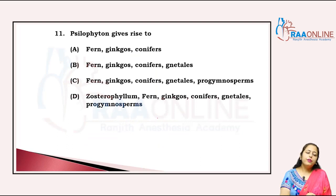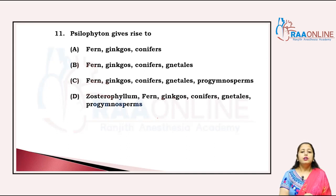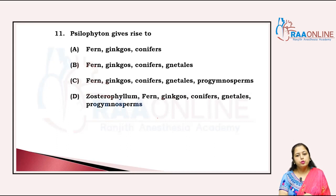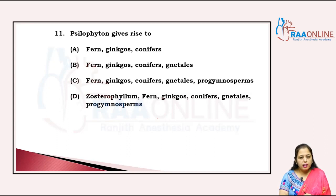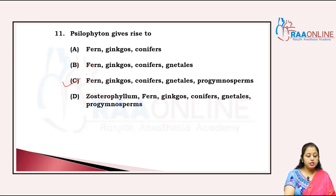Psilophyton gives rise to ferns, ginkgoes, and conifers — correct. Ferns, ginkgoes, conifer gentils — also correct. Ferns, ginkgoes, conifer gentils, and progymnosperms — also correct. But option D, zosterophyllum then ferns, ginkgoes, conifer gentils, and progymnosperms — no. So among these three, the most appropriate answer is C.